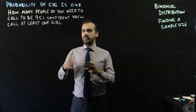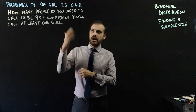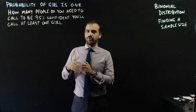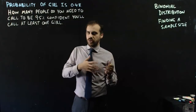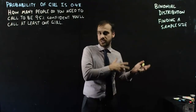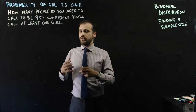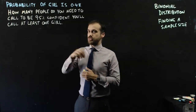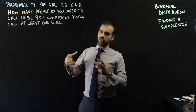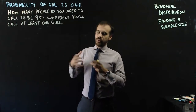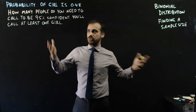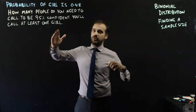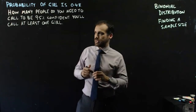Obviously if you call just one person, you'd have a 48% chance of calling a girl, and a 52% chance that it was a boy. If you call two people, the odds of at least one of those people being a girl is higher than that. We need to know how many people we need to call to make sure that we're 95% confident that we will call a girl.